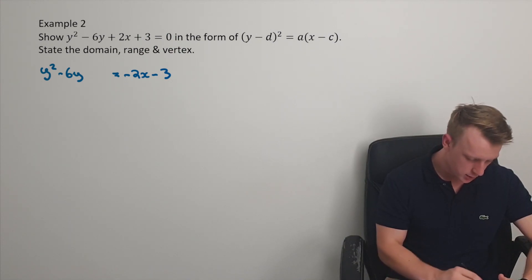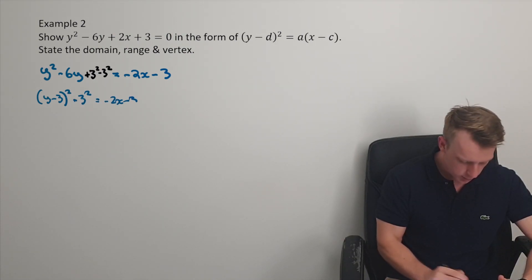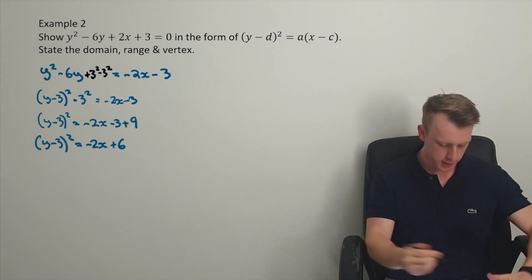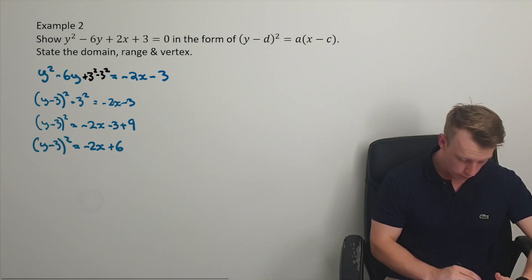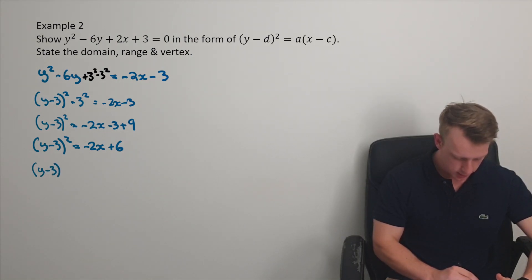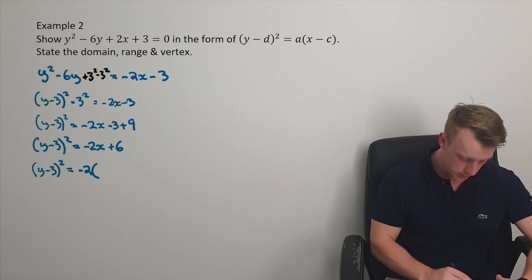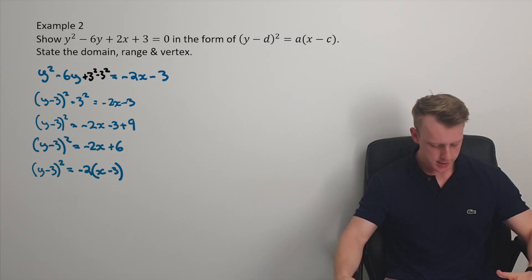And I'm just going to complete the square here. So I need to halve that b term and square it, plus and minus it, so that I can set for y minus 3 squared minus 3 squared, equals negative 2x minus 3. And so when we rearrange it, we can really complete the square, put all the stuff onto the other side. So we're almost done, we just need to factorize this other side here. y minus 3 squared is equal to, bring out that negative 2, because x needs to be positive, times x minus 3.